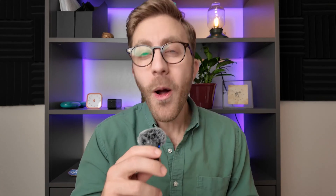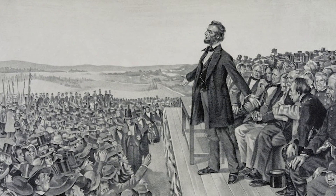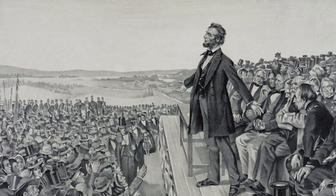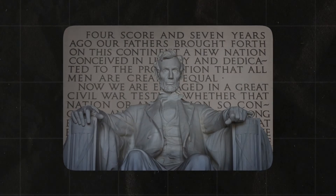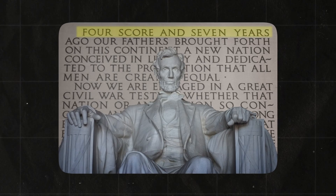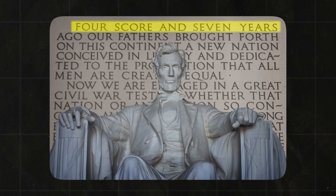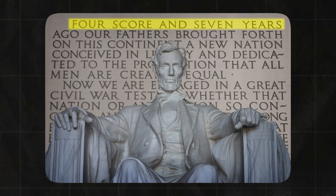For example, base 20, which Abraham Lincoln used when he gave the Gettysburg Address. When he said 'four score and seven years ago,' a score is 20. So he meant 4 twenties plus 7, aka 87 years ago.